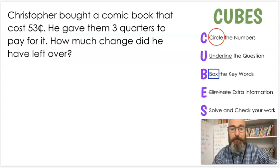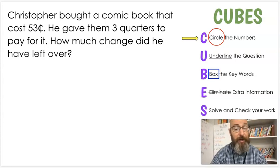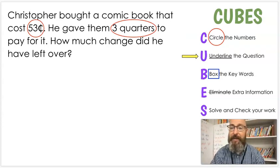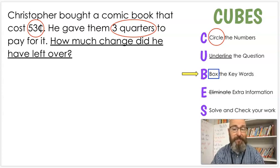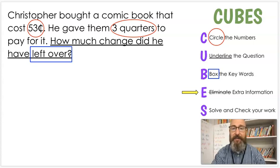All right, let's do one more for practice. Christopher bought a comic book that cost 53 cents. He gave them three quarters to pay for it. How much change did he have left over? So again, C is circle the numbers. What are the numbers? 53 and three quarters. I'm sure you found those already. U is underline the question. What's the question? How much change did he have left over? B is box the keywords. Do you see any keywords? Leftover. Of course, we'll go back in a minute and check that and see what left over stands for. We should know that already. Do we have any extra information? Not really.